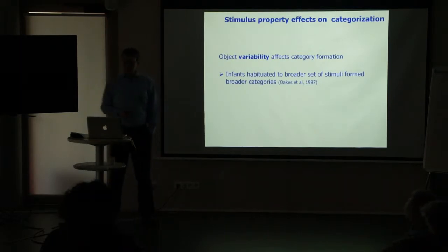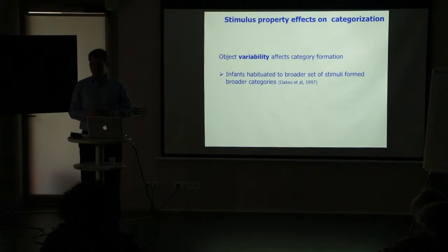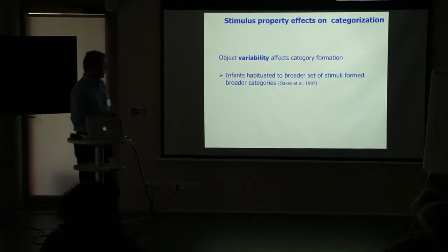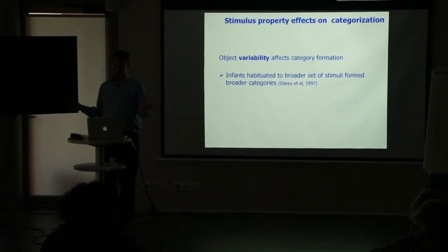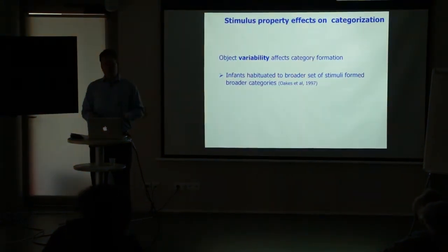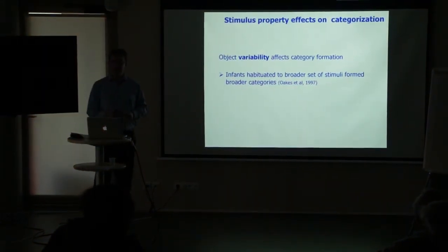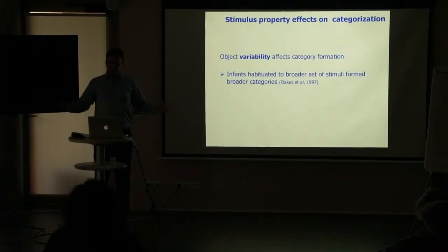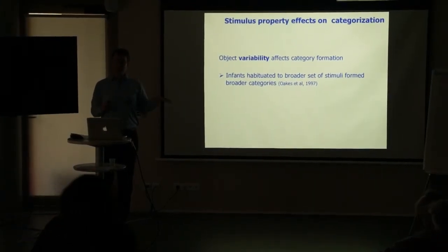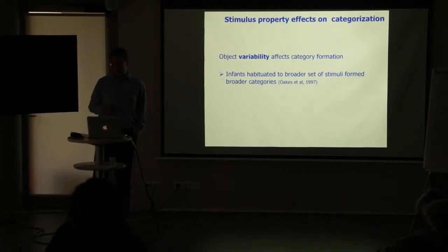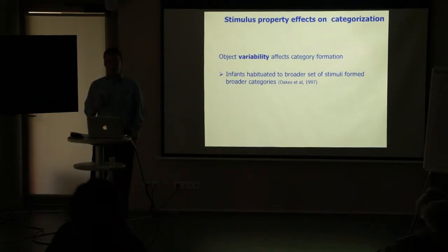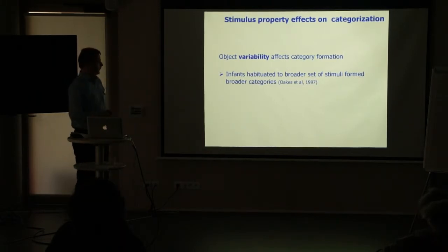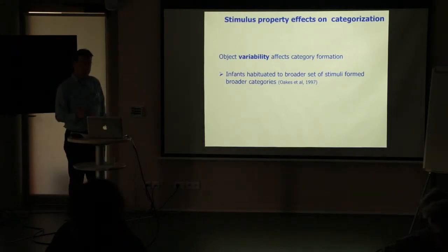The variability of objects shown during familiarization affects the categories infants form. In a study by Oakes and colleagues, infants familiarized on a highly variable set of stimuli generalized the category to a far broader range of novel stimuli than infants familiarized on a narrow, very similar set. So the nature of the relationships between stimuli in the familiarization phase affects the breadth of the categories formed.